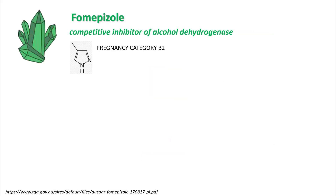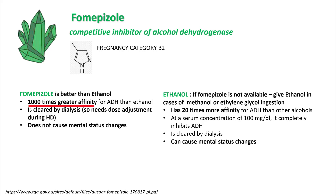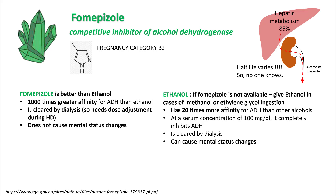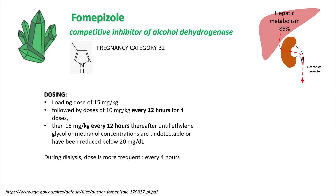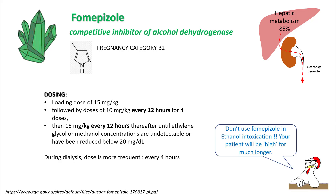Fomepizole is a competitive inhibitor of alcohol dehydrogenase and has a thousand times greater affinity for alcohol dehydrogenase than ethanol. It is cleared by dialysis so its dose needs to be adjusted, and the good thing is it does not cause mental status changes. If you do not have fomepizole you can use ethanol, but understand that it can cause mental status changes and is only 20 times more potent. Fomepizole is metabolized in the liver, converted into 4-carboxypyrazole, and excreted in urine. Make sure you give a loading dose followed by 10 mg/kg every 12 hours for 4 doses, then 15 mg/kg every 12 hours thereafter until you have undetectable levels or levels below 20 mg/dL. During dialysis, dosing should be more frequent as this compound is dialyzable. Don't use fomepizole in ethanol intoxication, as ethanol will persist since it cannot be metabolized and your patient will remain intoxicated for much longer.